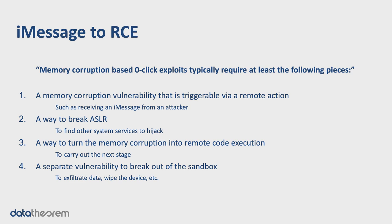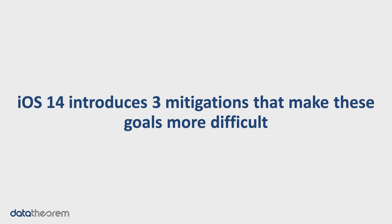Secondly, you'll need a way to break ASLR, a scheme we'll look at in a minute. Thirdly, you'll need a way to turn that memory corruption vulnerability into remote code execution. And finally, once you can remotely execute code, you'll need to leverage a separate vulnerability to break out of the sandbox — in this case the process that receives iMessages — so you can then infect the rest of the system, exfiltrate data, brick the user's device, install spyware, or anything else. iOS 14 introduces three mitigations that make all of these goals more difficult for an attacker.